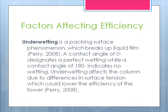There are a number of factors affecting efficiency, first of which is underwetting. Underwetting is a packing surface phenomenon which breaks up liquid film. A contact angle of 0 degrees designates perfect wetting, while a contact angle of 180 degrees indicates no wetting. Underwetting affects the column due to differences in surface tension, which could lower the efficiency of the tower.